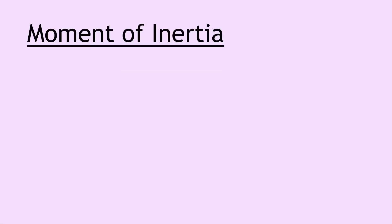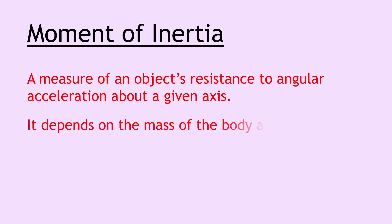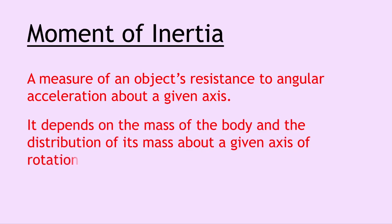Moving on we have moment of inertia, and this is a measure of an object's resistance to angular acceleration about a given axis. It depends on the mass of the body and the distribution of its mass about a given axis of rotation. Remember there are different equations for moment of inertia depending on the shape of the object, and these are given on the relationship sheet in the exam.